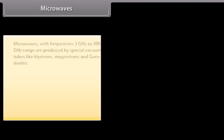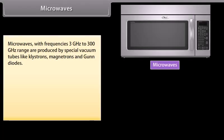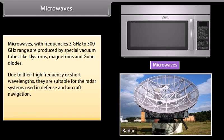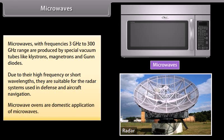Microwaves. Microwaves with frequencies 3 GHz to 300 GHz range are produced by special vacuum tubes like Klystrons, magnetrons and Gunn diodes. Due to their high frequency or short wavelengths, they are suitable for the radar systems used in defense and aircraft navigation. Microwave ovens are domestic application of microwaves.